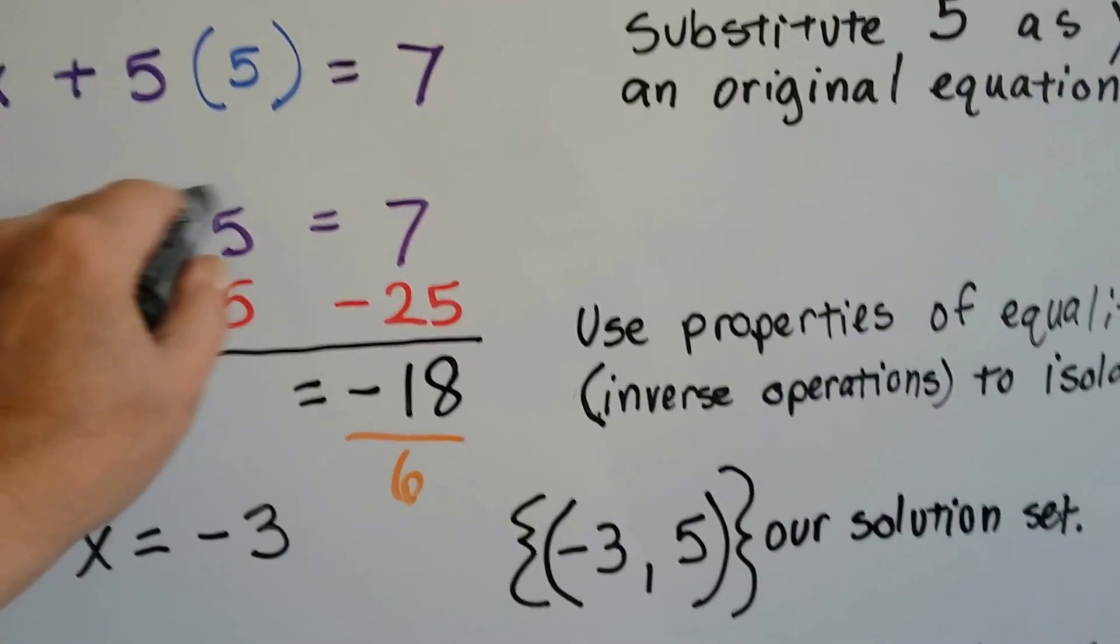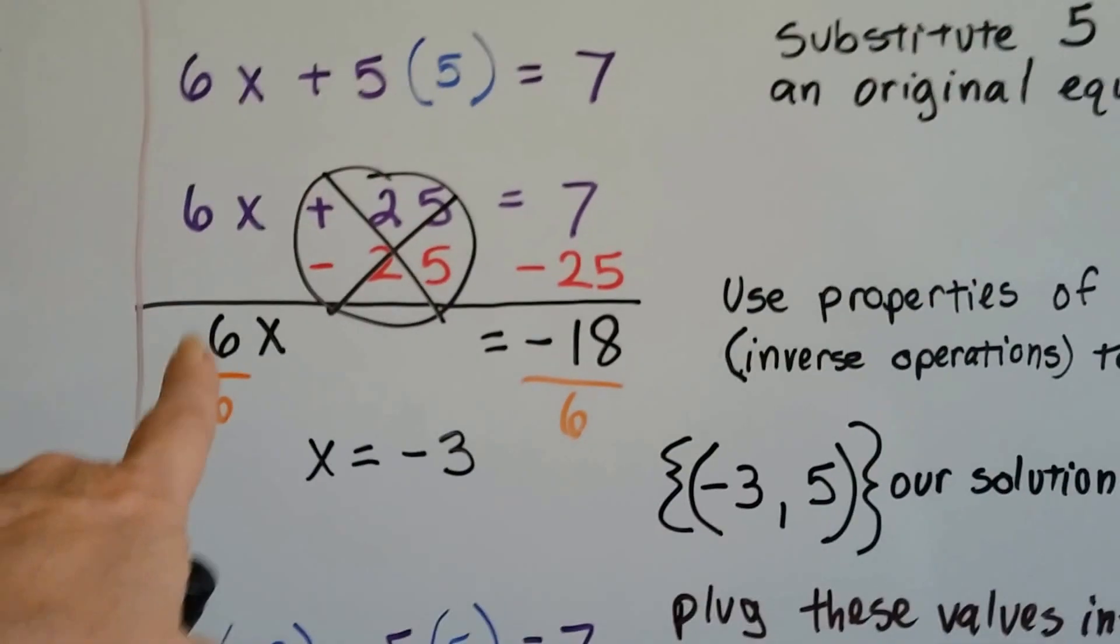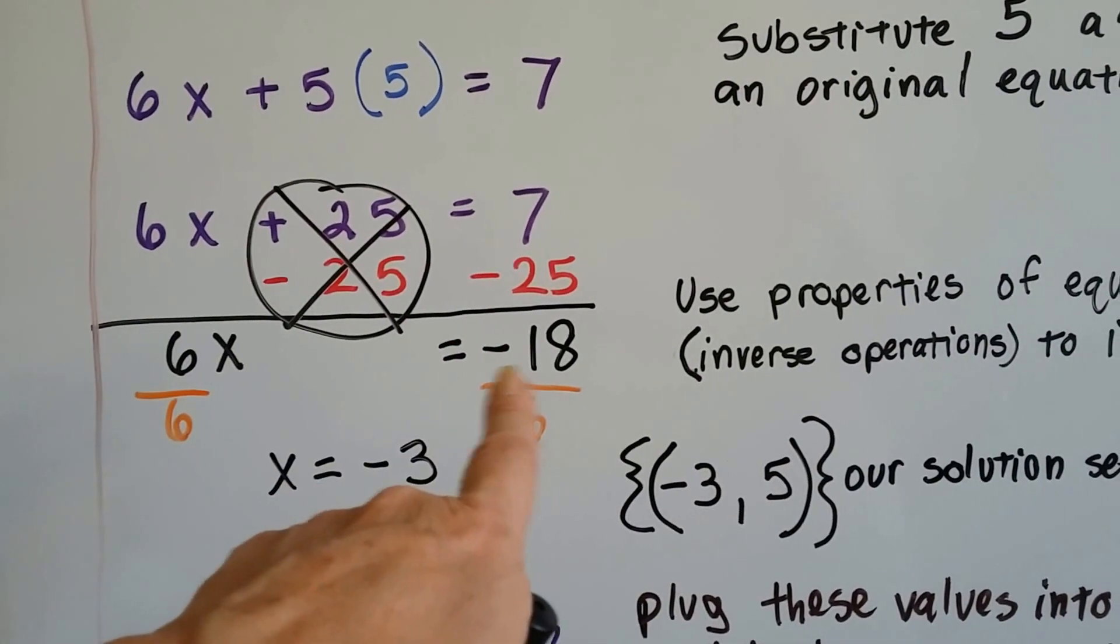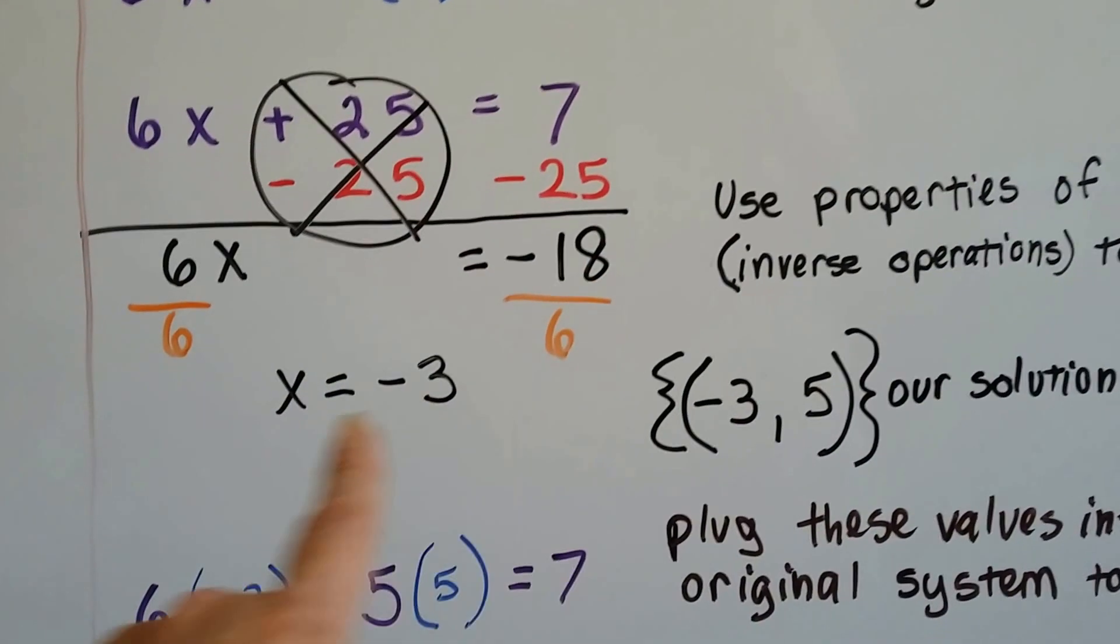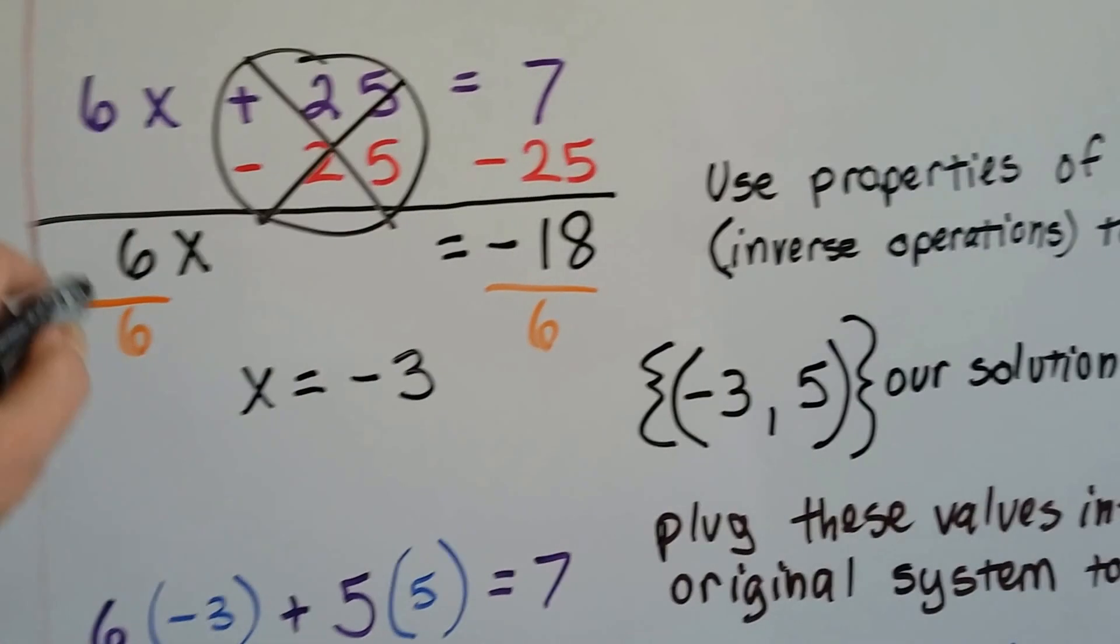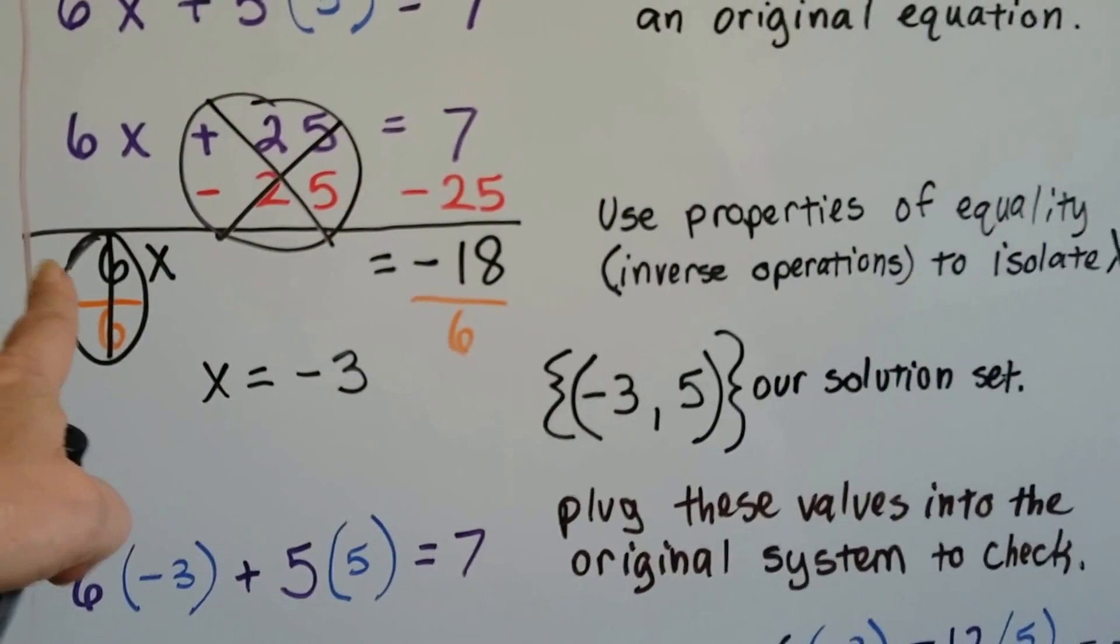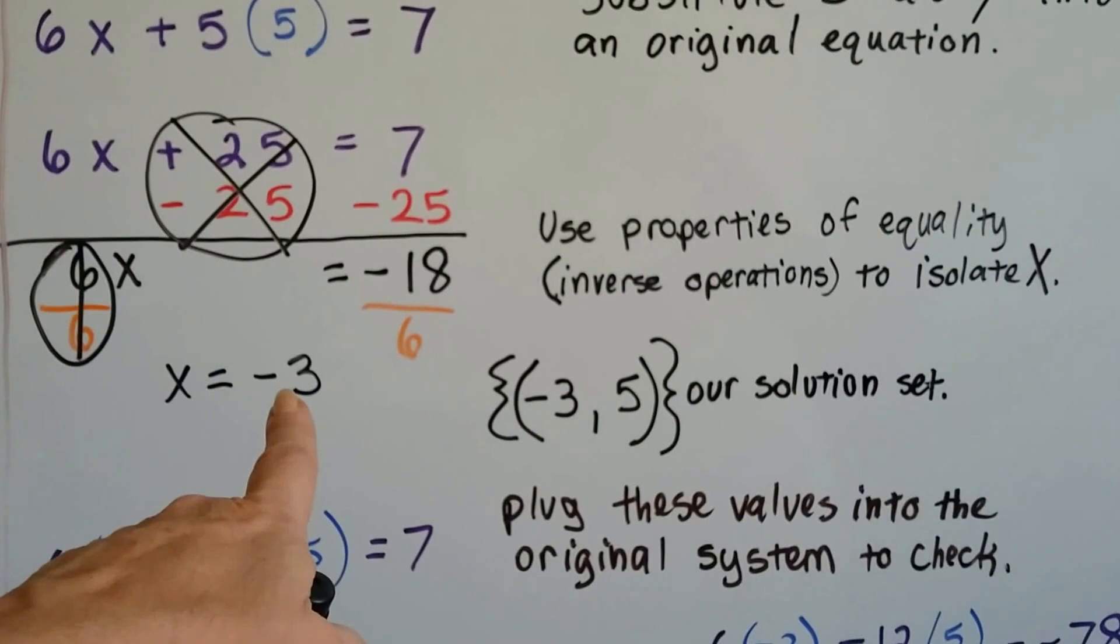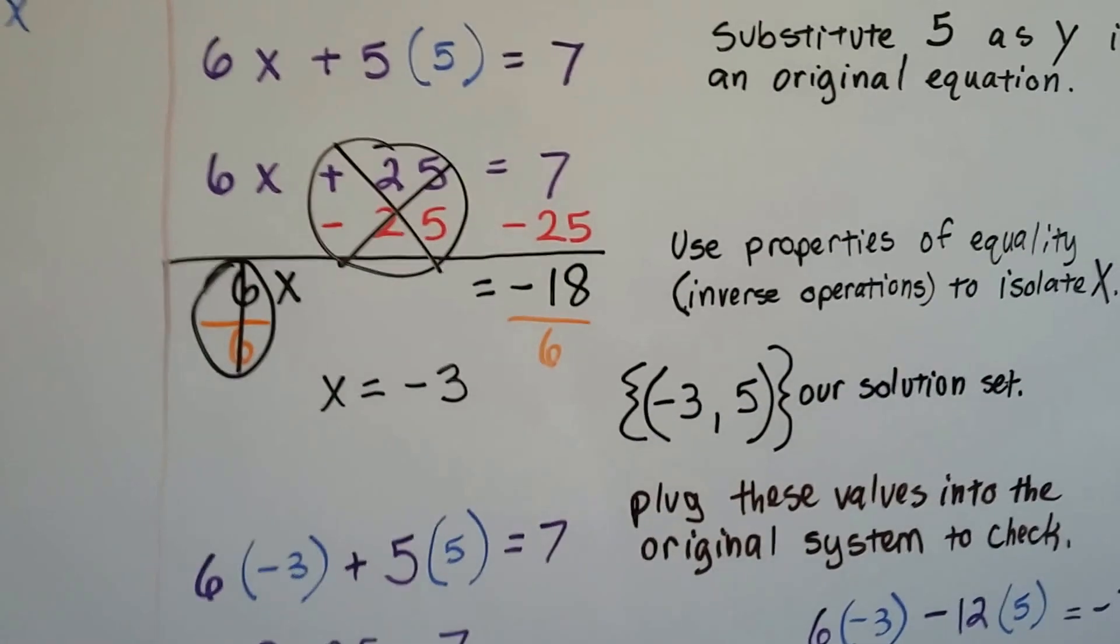Because this cancelled out, didn't it, as a zero pair. So now we've got 6x equals, and we took 25 away from the positive 7. We've got a negative 18. 6x equals negative 18. We divide both sides by the 6 to get this x by itself. We get our friend the invisible 1. And we've got 1x, and negative 18 divided by a positive 6 gives us a negative 3. So now we've got our solution set. It's negative 3, 5.